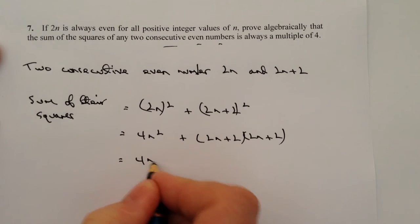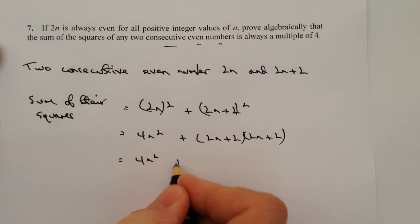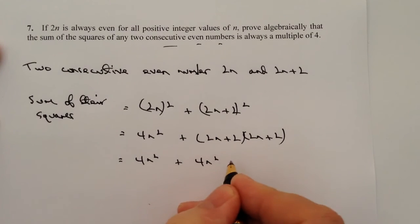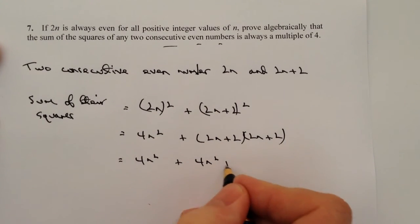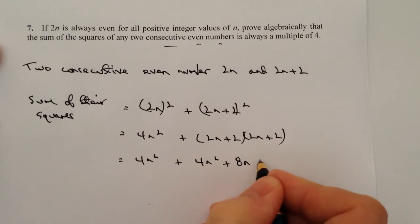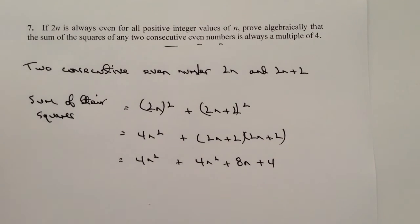And if I then multiply out those brackets, I end up with 4n squared here, and then here I've got 2n times 2n is also 4n squared, plus 4n plus 4n is plus 8n plus 4. And again, if you're not sure about how to do that, then please do refer through to some of the earlier videos on multiplying out bracketed equations.